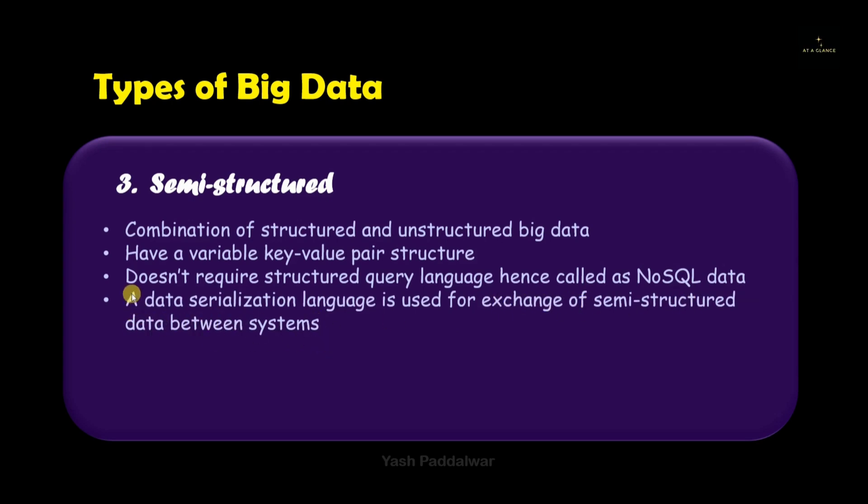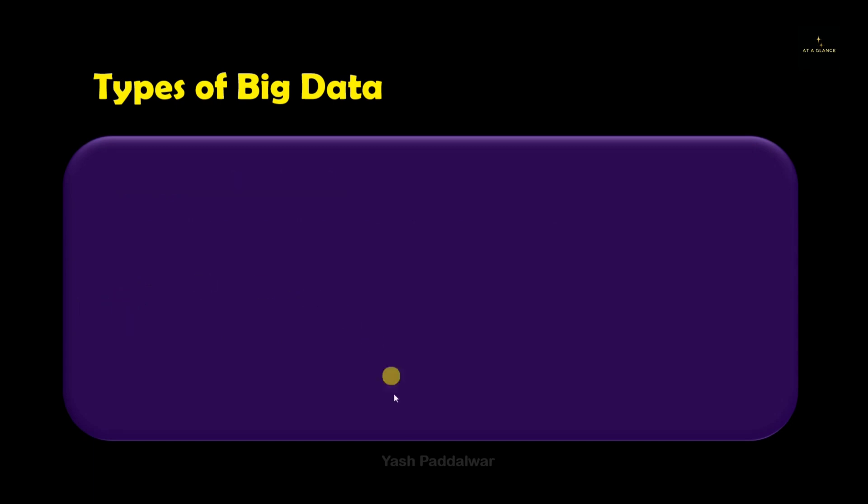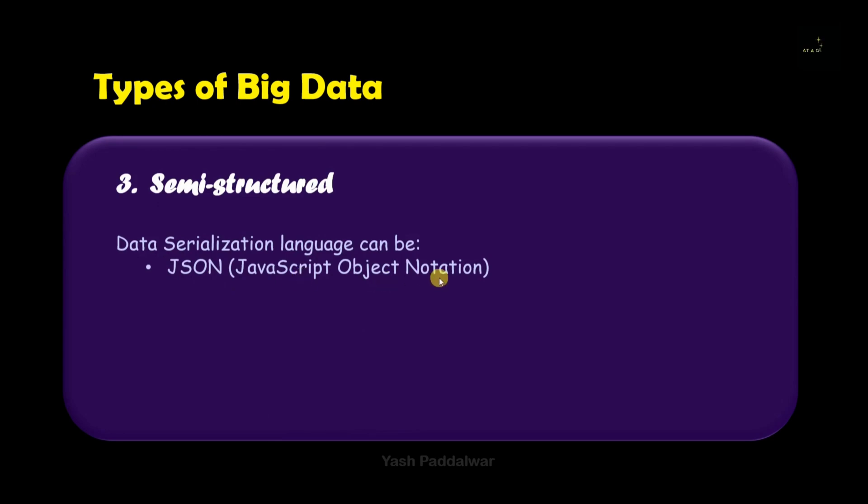Now for retrieval of this semi-structured data we require data serialization language, which can also be used for exchange of semi-structured data between different systems. Now let's see what this data serialization language can be. It can be JSON which is JavaScript Object Notation. JSON is a lightweight format which is used to transport or store the semi-structured data. It is like a key-value pair.